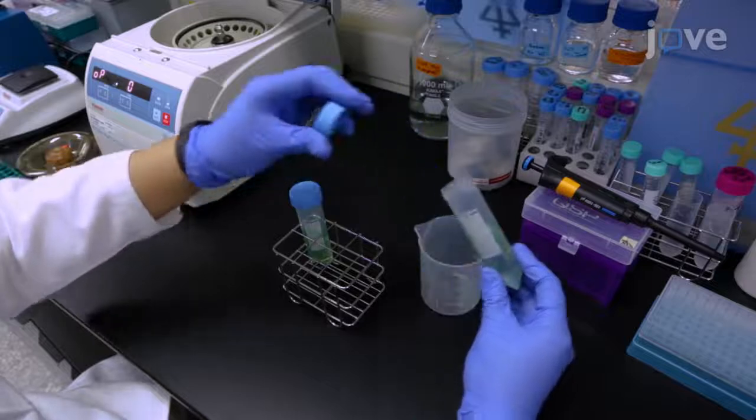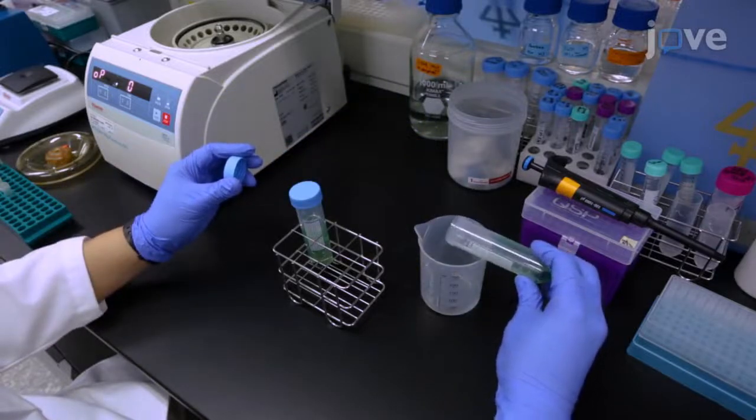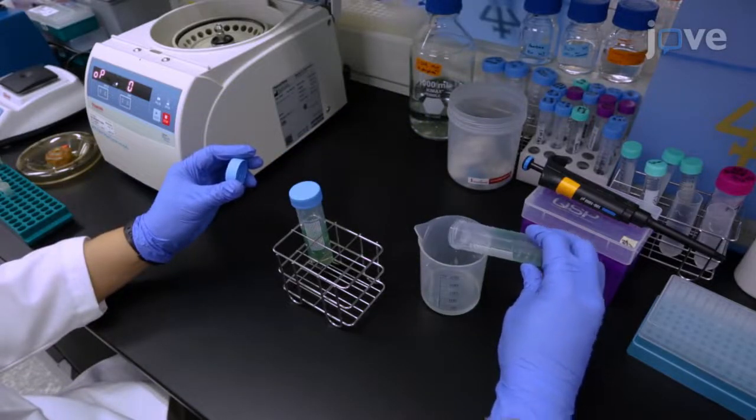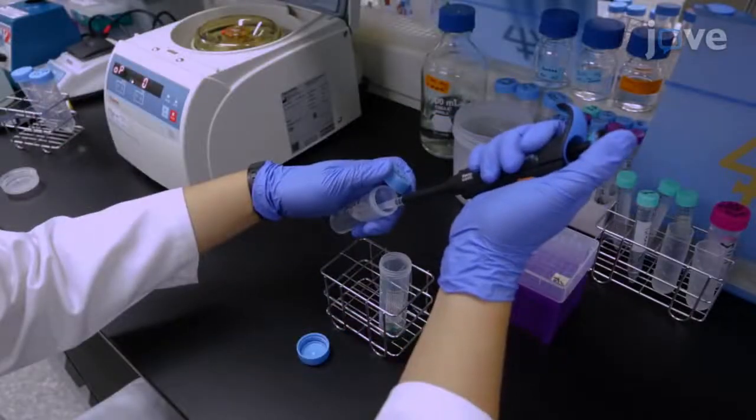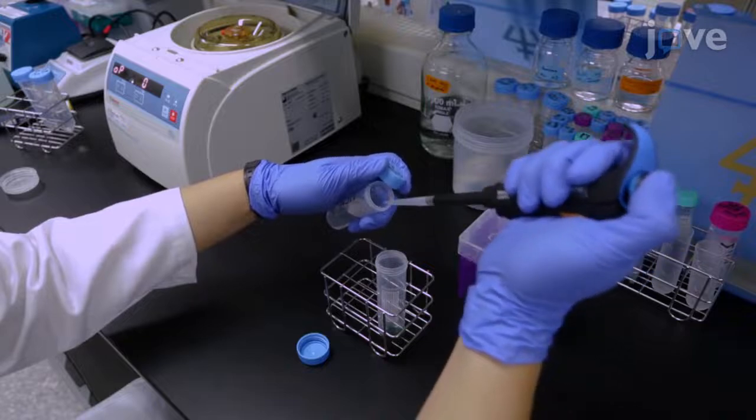Discard the supernatant and resuspend the cells with 0.75 molar potassium phosphate buffer. Measure the wet weight of the pellet by an electronic balance and resuspend the 1 gram wet weight of the pellet in 5 mL of the buffer.